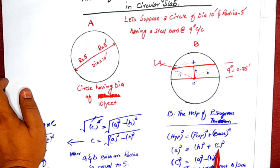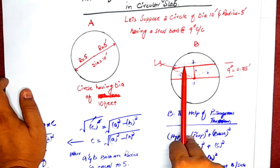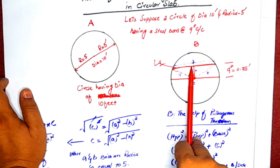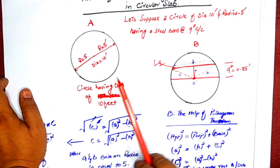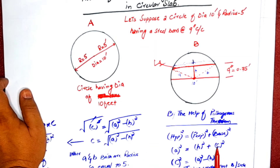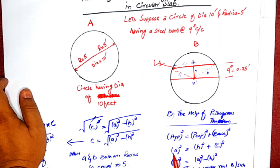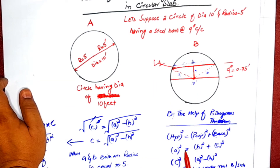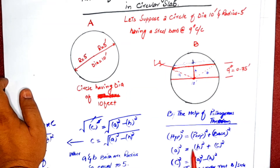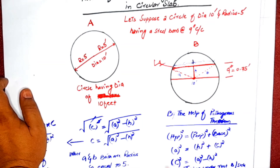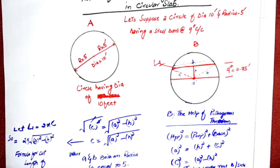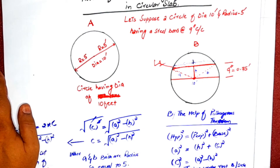We want to find the value of c, which is half the length of bar one. Shifting h² to the other side, we get: c = a² − h². So c, which is half the length of L1, equals a² minus h².